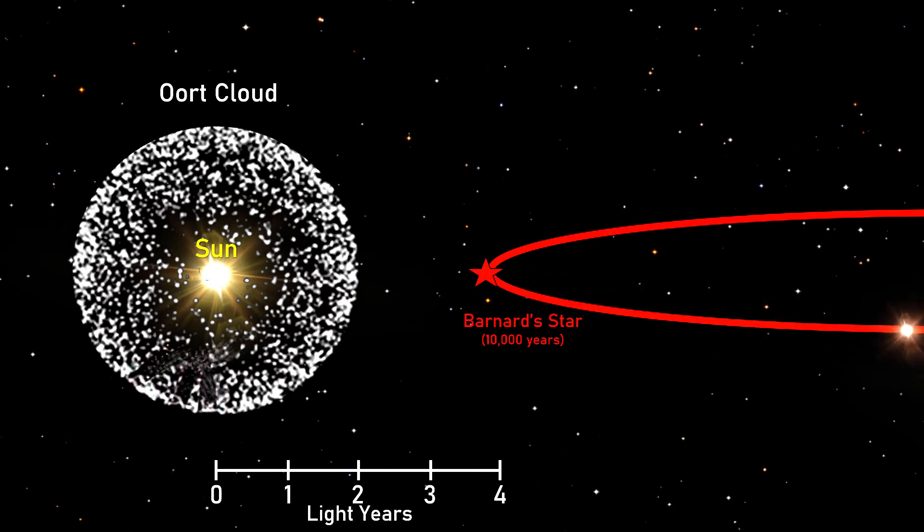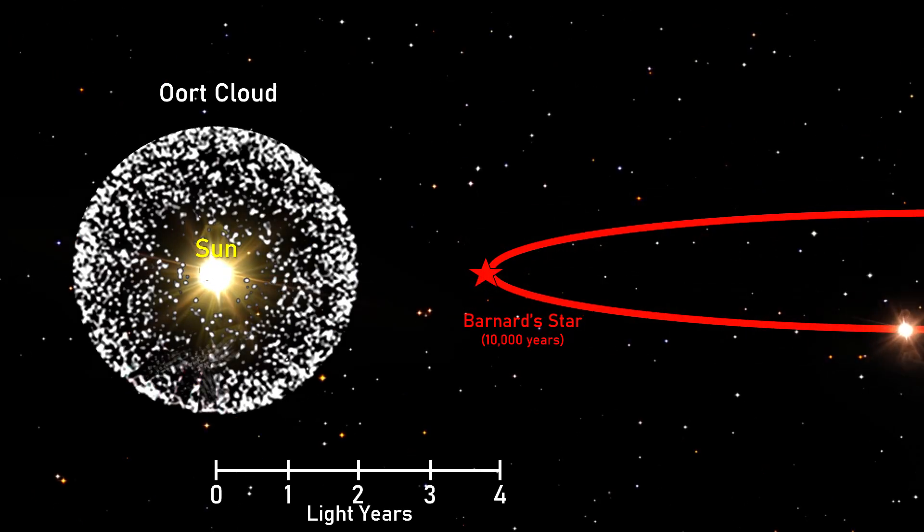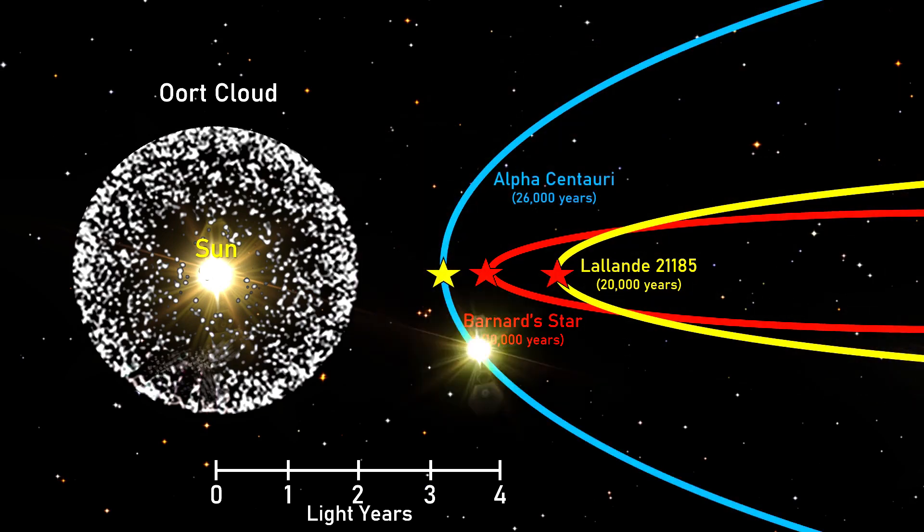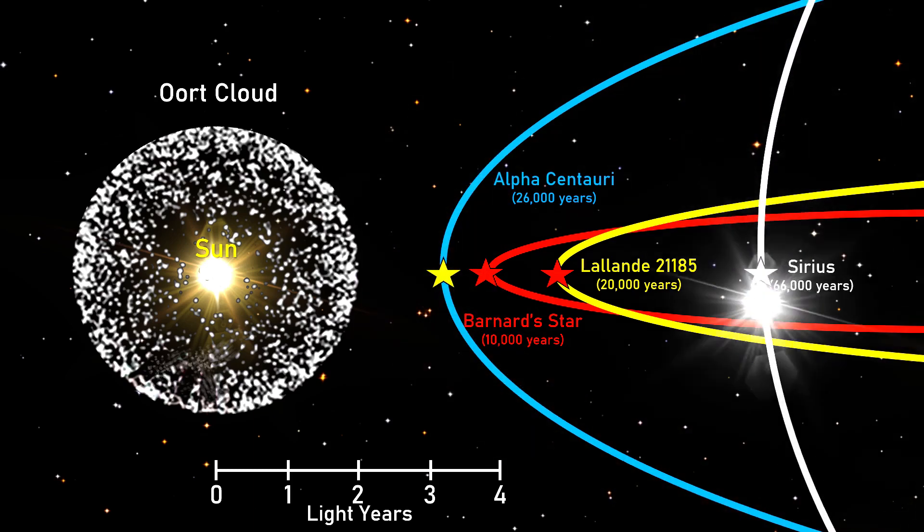In today's graphic, we see a diagram of the nearest stars and their potential closest approach. First, Barnard's star, then Lalande 2-1185, followed by the Alpha Centauri system and the dog star of Sirius is also there for reference, although it would never be the closest system to us.